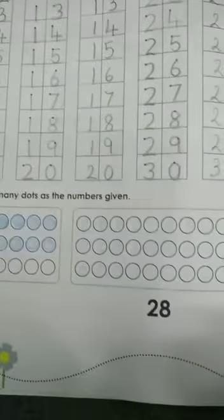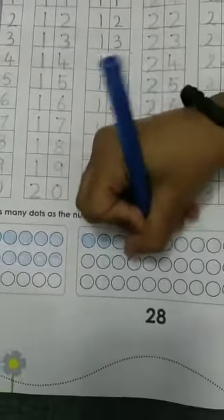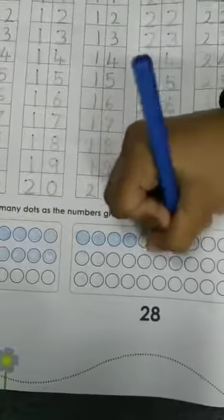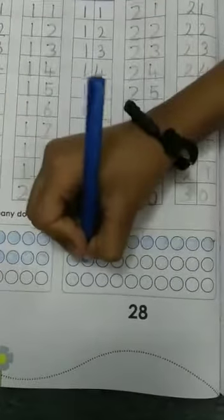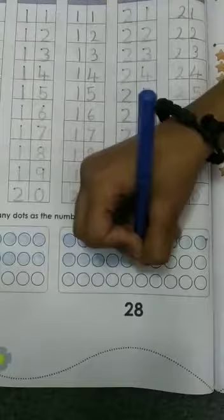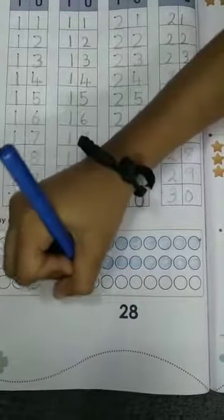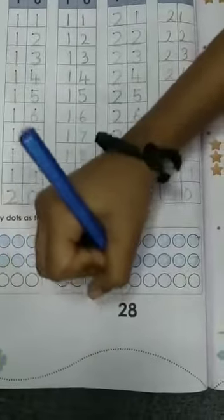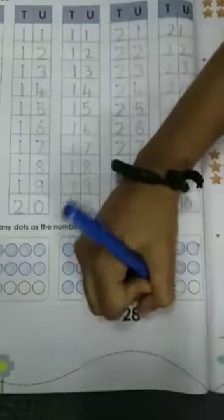Here, 28. That means you have to count till 28, okay? One, two, three, four, five, six, seven, eight, nine, 10, 11, 12, 13, 14, 15, 16, 17, 18, 19, 20, 21, 22, 23, 24, 25, 26, 27 and 28. Okay, now next page.